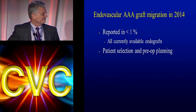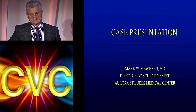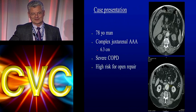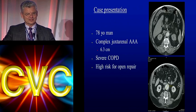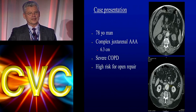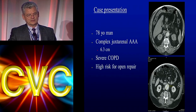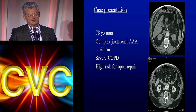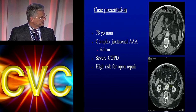That's the end of my talk on active migration. Dr. Jones asked me to present a case, so this is the case I'm presenting: a 78-year-old man with a complex juxtarenal abdominal aortic aneurysm. I've been following this man for about three years — he was at 5.2, then 5.6 — and we didn't have any options to treat him at the time.